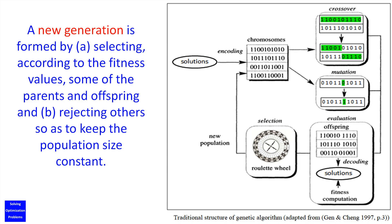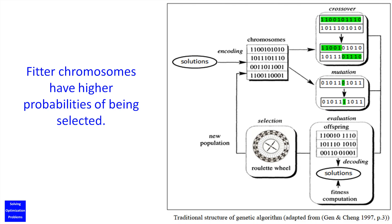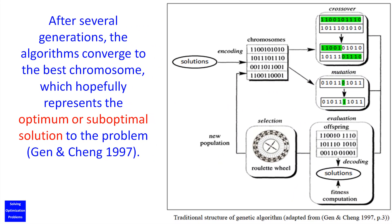A new generation is formed by: A) selecting, according to the fitness values, some of the parents and offspring, and B) rejecting others, so as to keep the population size constant. Fitter chromosomes have higher probabilities of being selected. After several generations, the algorithm converges to the best chromosome, which hopefully represents the optimum or suboptimal solution to the problem.